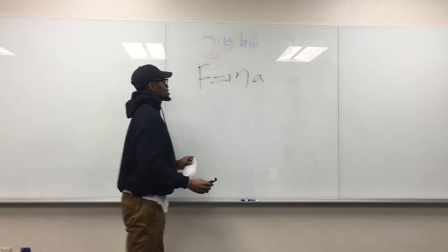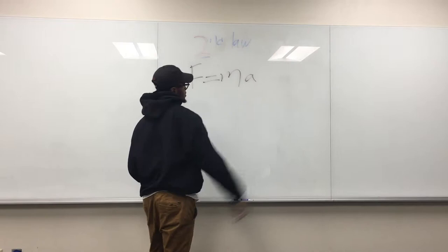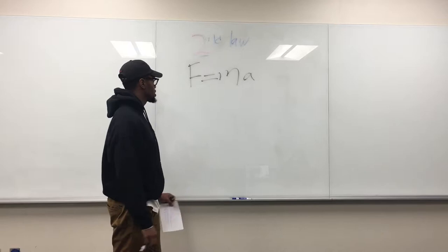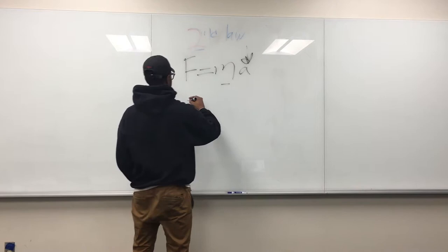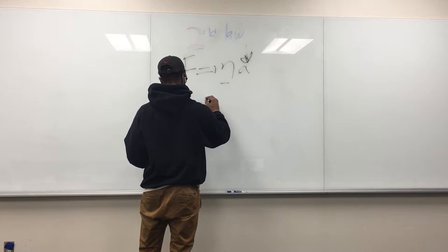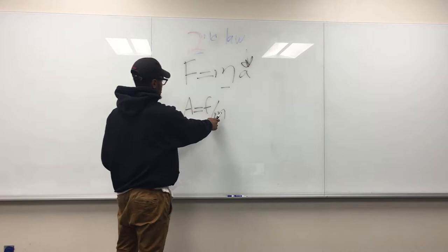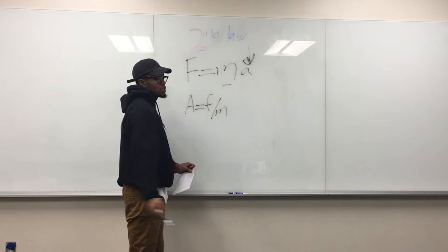This states that force equals mass times acceleration. So if you're trying to become like Usain Bolt and run 9.58 in the 100 meters, you need to increase your acceleration and decrease your mass. The acceleration equation states that acceleration equals force divided by mass. So if you can increase your force and decrease your mass, you will maximize your acceleration.